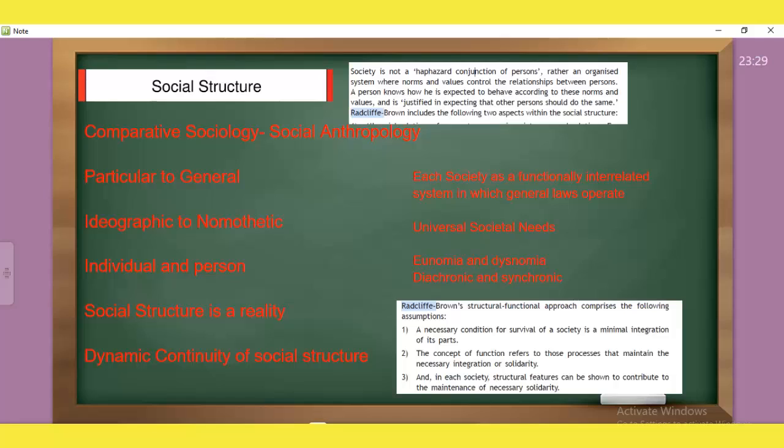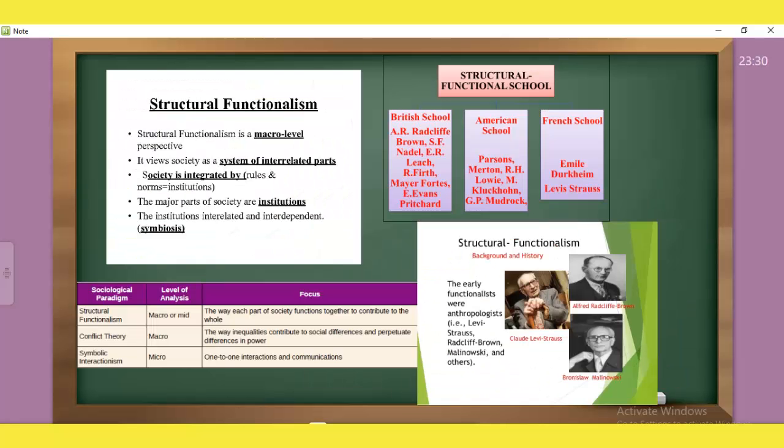And in society, we have two things: synchronic functions and diachronic functions. Synchronic functions are associated with stability and influences. Society's major part is institutions. Institutions are interdependent and interrelated, not independent or unrelated. The same thing is symbiosis.